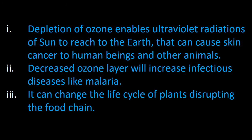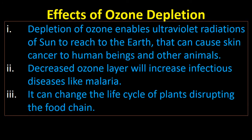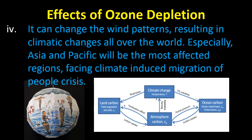These are the drastic effects of ozone depletion: depletion of ozone enables ultraviolet radiations of the sun to reach the Earth, causing skin cancer in human beings and other animals. A decreased ozone layer will increase infectious diseases like malaria, and it can change the life cycle of plants, disrupting the food chain.